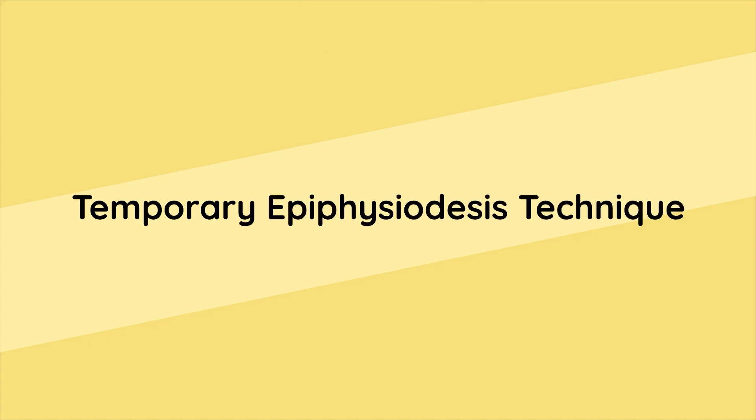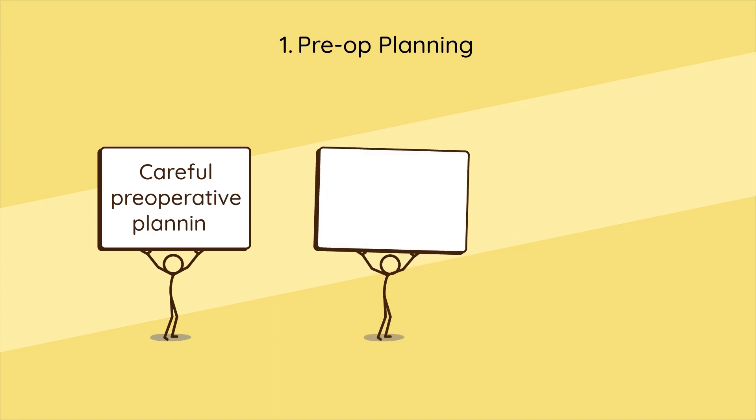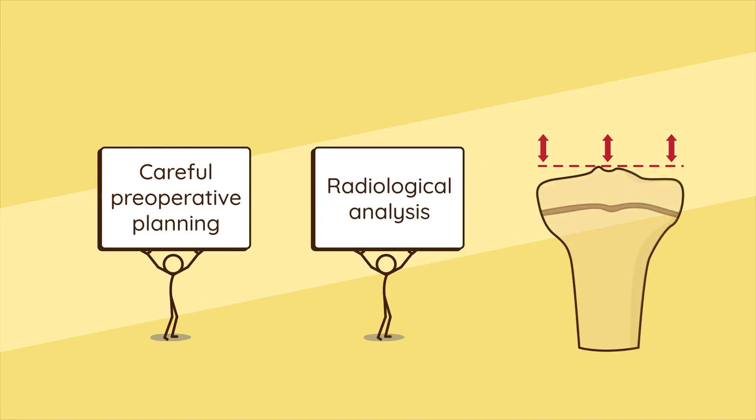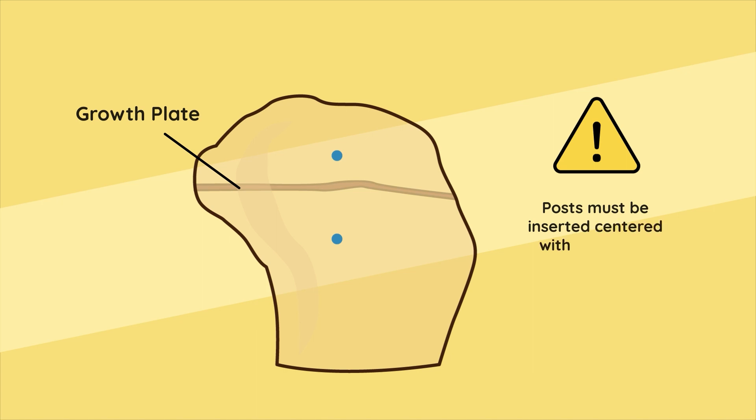Temporary epiphysiodesis technique: Step one - pre-op planning: Careful pre-operative planning and radiological analysis should be used to define the magnitude of the limb length discrepancy and optimal time of treatment. Step two - surgical approach: Locate the physis and mark the skin above and below the growth plate. Posts must be inserted centered along the bone physis to avoid secondary deformities. Proceed with incision and approach. The technique can be done percutaneously or open.